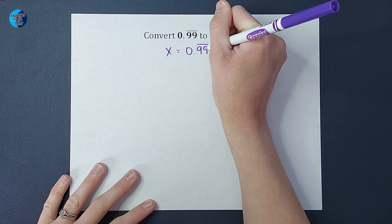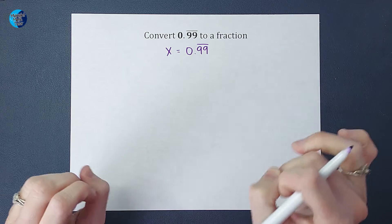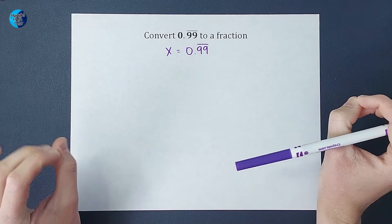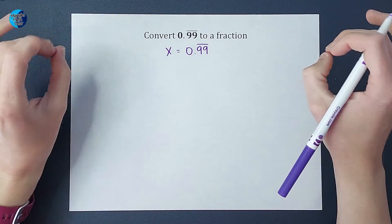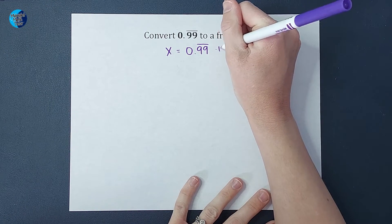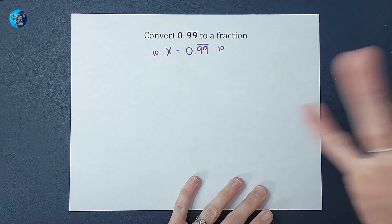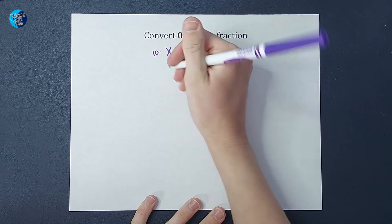This line above it signifies that the nines keep going literally forever. Now the next thing I'm going to do in this case is I'm going to multiply both sides by 10. This is legal because we are doing it to both sides, so my equation stays balanced.